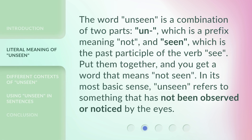The word 'unseen' is a combination of two parts: 'un,' which is a prefix meaning 'not,' and 'seen,' which is the past participle of the verb 'see.' Put them together, and you get a word that means 'not seen.' In its most basic sense, 'unseen' refers to something that has not been observed or noticed by the eyes.